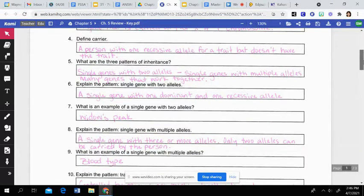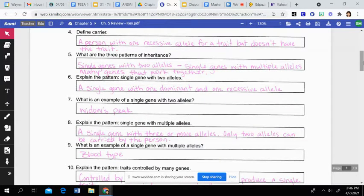All right, then three patterns of inheritance. This is when you have single genes with only two alleles, so that dominant allele or recessive allele. It could be single genes with multiple alleles, or it could be many genes that work together to produce a single trait. The pattern of single genes with two alleles just means that it has one dominant and one recessive allele that codes for a single trait. An example of this would be a widow's peak or like attached earlobes, something that is either going to be visible or not going to be visible.